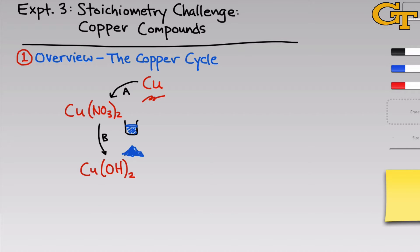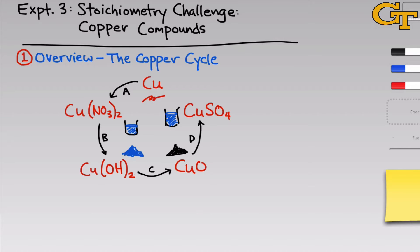Subsequently, we'll use sodium hydroxide to convert copper 2 nitrate to copper 2 hydroxide, which is a blue solid that will precipitate out because the hydroxide is not soluble in water. Subsequently, we'll heat that solid to form a black powder, copper 2 oxide, and then subject the copper 2 oxide to treatment with sulfuric acid, H₂SO₄, to form H₂O and copper 2 sulfate, CuSO₄, which we'll again observe as a blue solution.